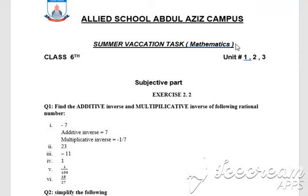Similarly, the additive inverse of 23 will be minus 23, and the multiplicative inverse of 23 will be 1 by 23. Question number 3 is minus 11. The additive inverse of minus 11 will be 11, and the multiplicative inverse of minus 11 will be minus 1 by 11. You can find the multiplicative and additive inverse in the same way.